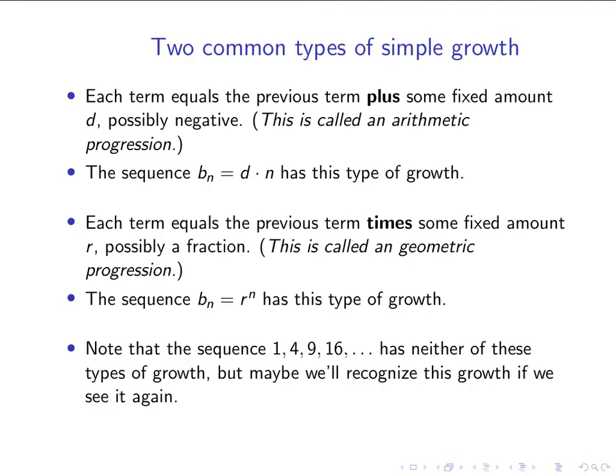The sequence 1, 4, 9, 16 is neither arithmetic nor geometric — that's the one where we're adding successively higher odd numbers and the closed formula ended up being a_n equals n squared. We want to keep that one in our pocket: if we see that kind of pattern again, we'll know it has something to do with a_n equals n squared.